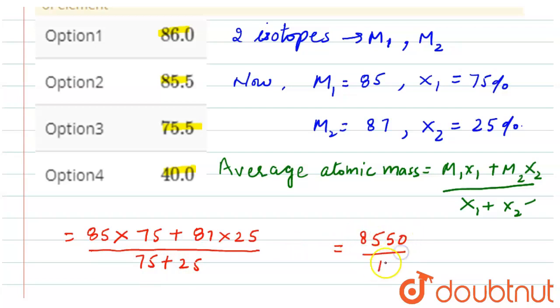8550 divided by 100. So after calculations we get 85.5.